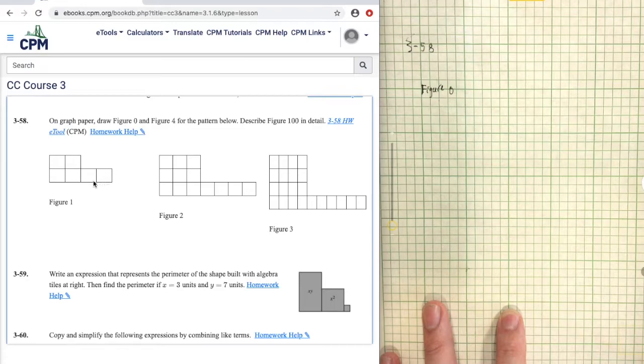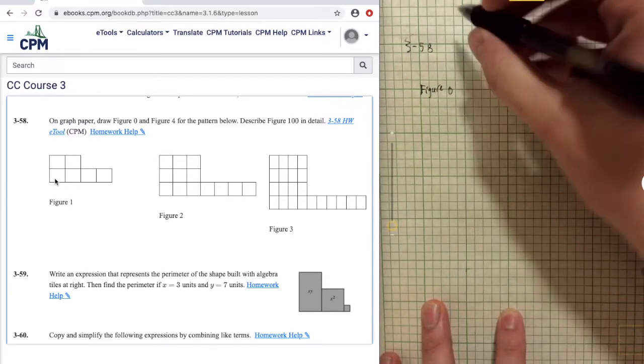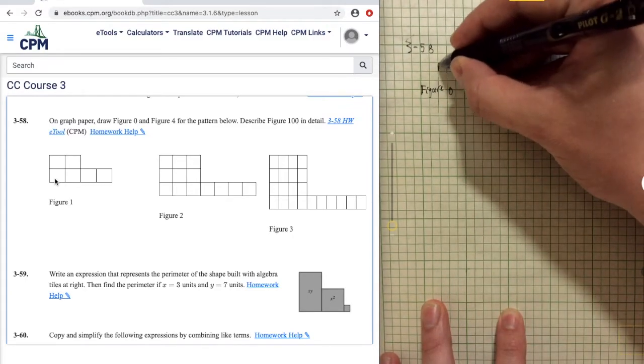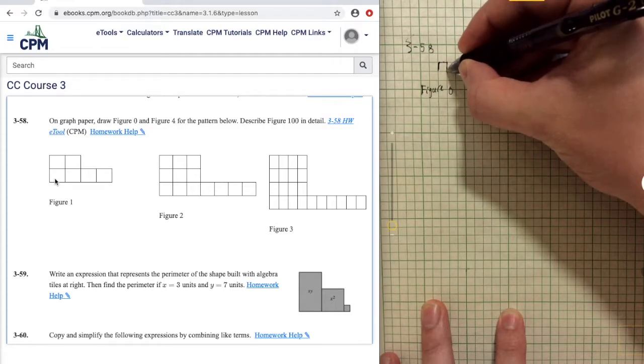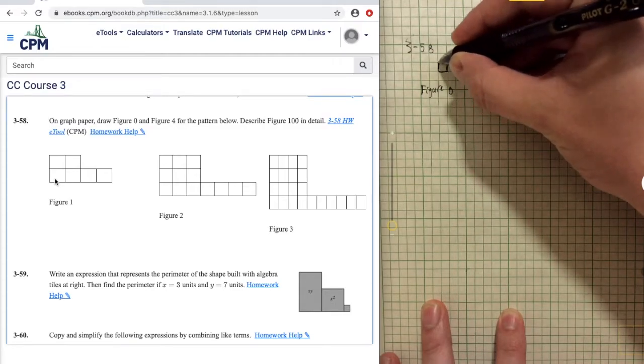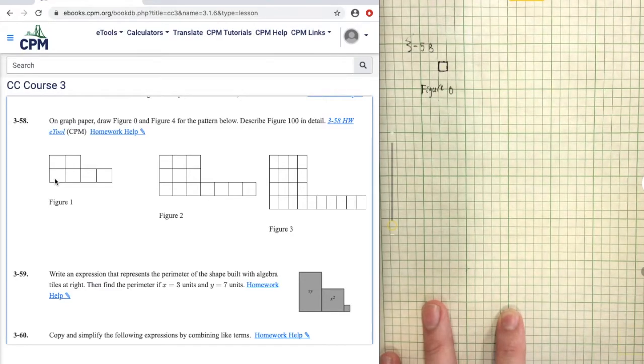And then this tail would shrink by two. So it would disappear. So it would look like these two tiles would go away. And then this two by two square would just go down to a single tile. So I think figure 0 might look a little bit like this. Just a single little tile like that. It doesn't actually look like these other shapes because it's so small. So it might be a little harder to figure out.